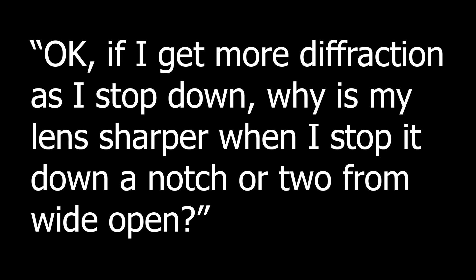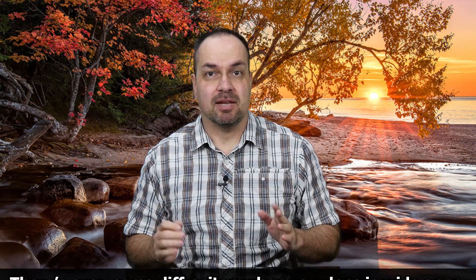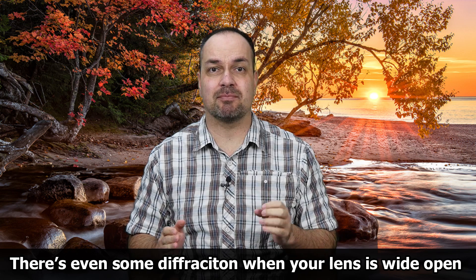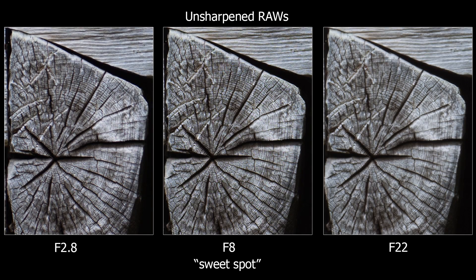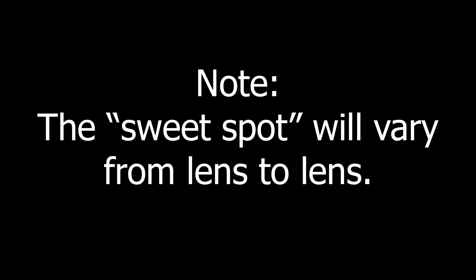Question 2: If I get more diffraction as I stop down, why is my lens sharper when I stop it down a notch or two from wide open? Technically speaking, every stop you go down increases diffraction. However, stopping down also has the effect of clearing up lens aberrations — basically slight imperfections in your lens. What's happening initially is that the clearing up of those lens aberrations has a much more profound impact on image quality than the small amount of diffraction introduced. When you reach that perfect balance between low diffraction and low aberrations, you land on the lens's so-called sweet spot — the f-stop that will be the absolute sharpest. As a rule of thumb it's generally about two stops down from wide open, but it can vary from lens to lens.